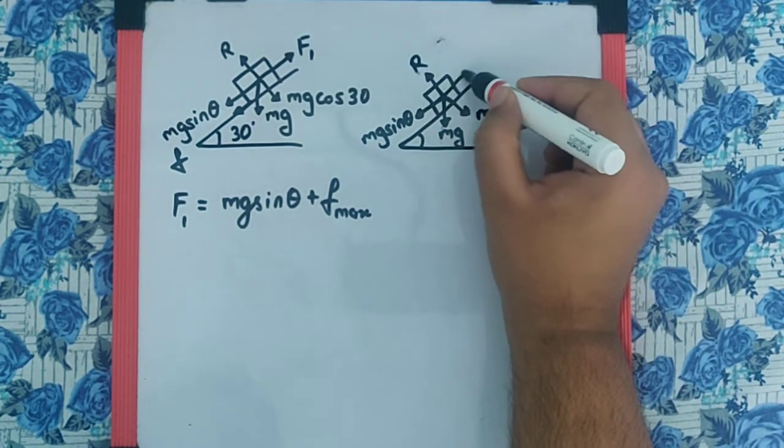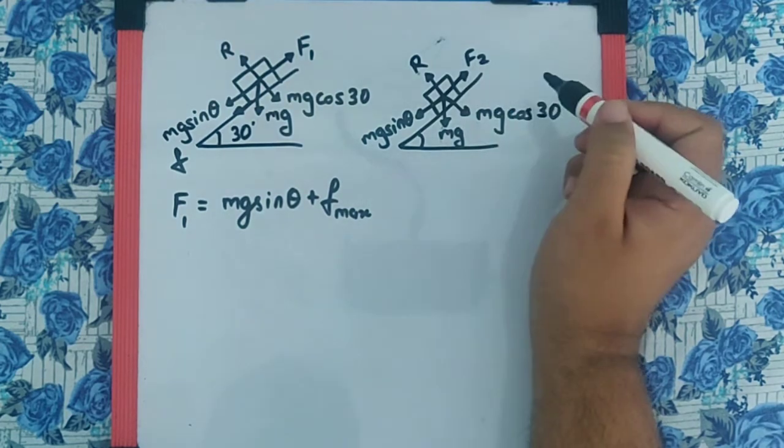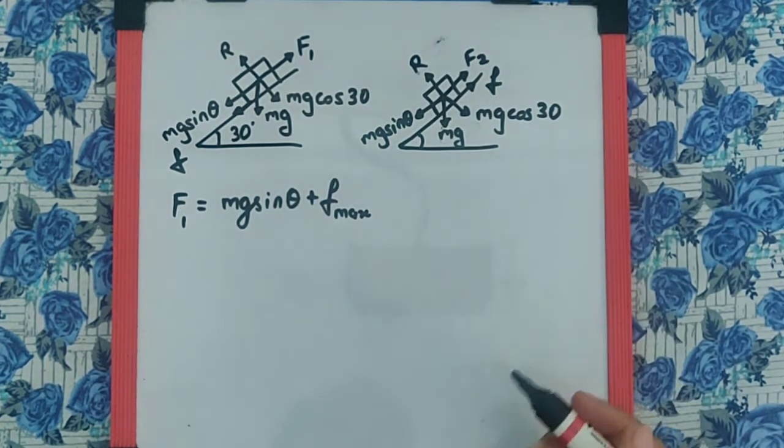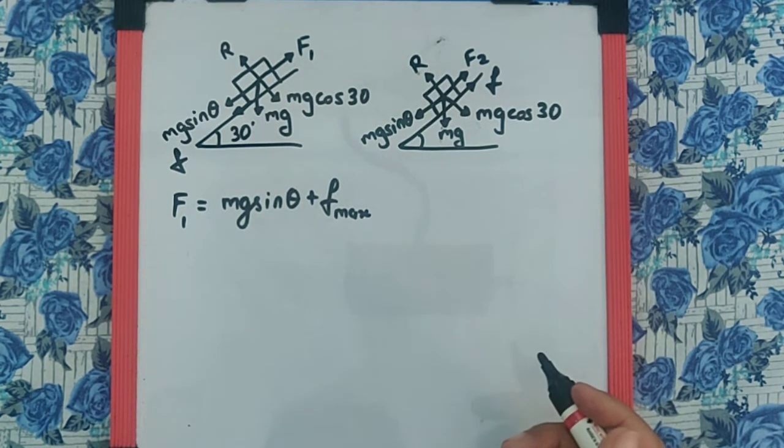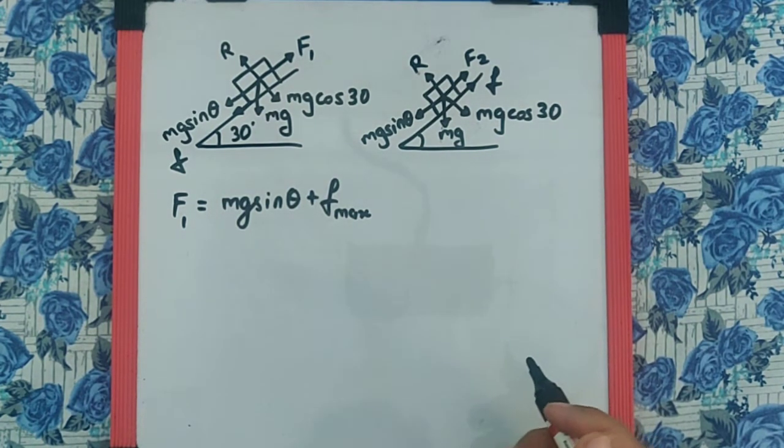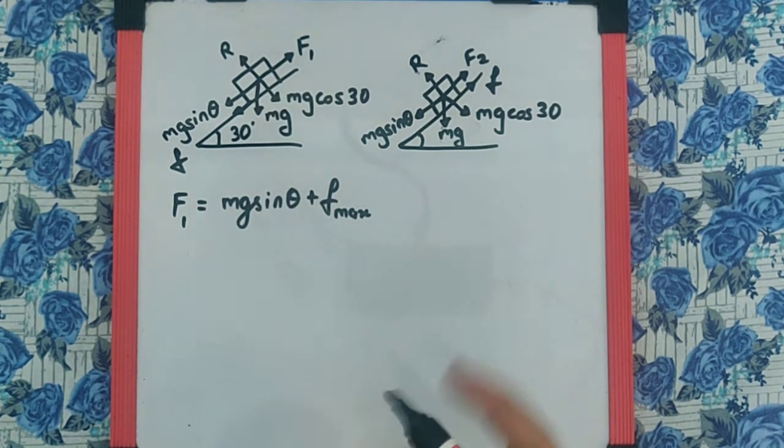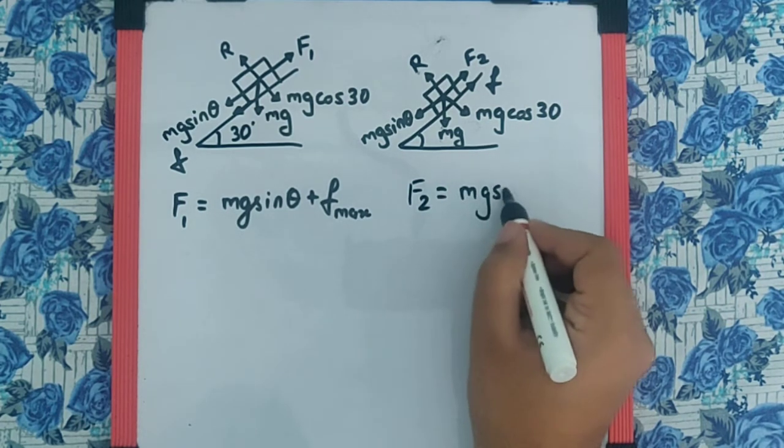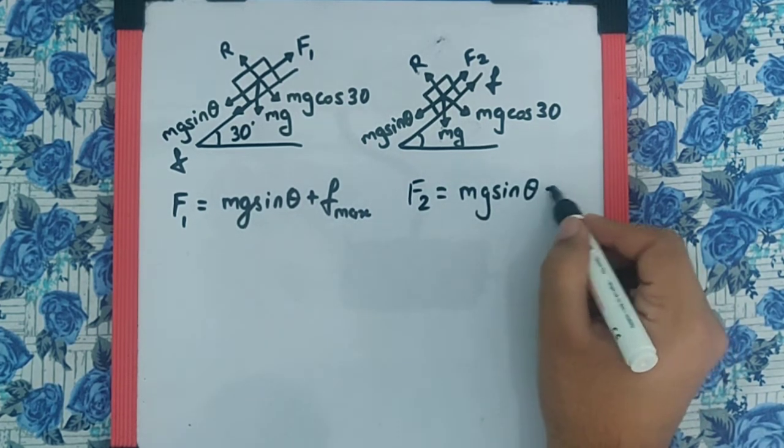Here the force required is to just prevent it from sliding down, so friction will act upwards because without that force F₂, the friction is not sufficient enough to prevent its sliding. And therefore we need that F₂, so that makes F₂ over here as mg sin θ minus